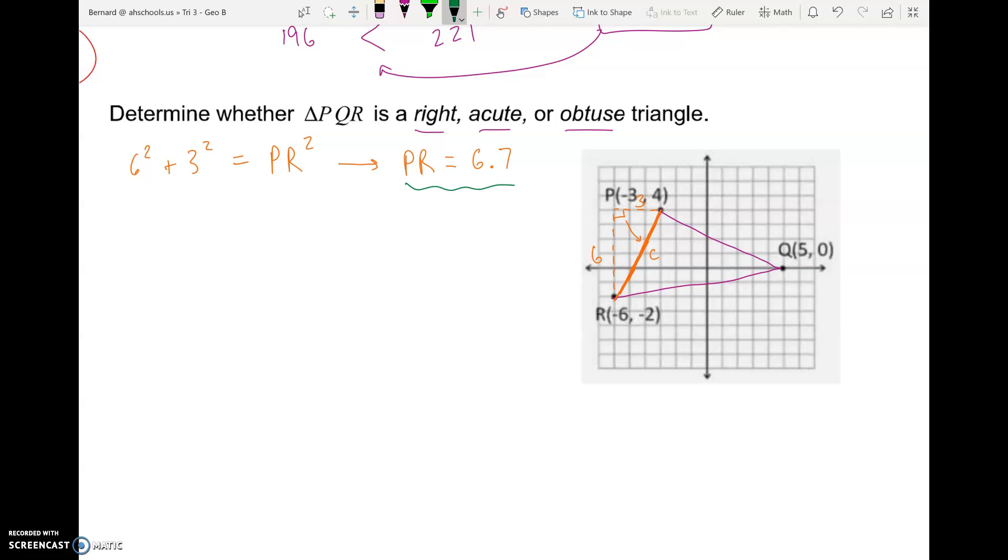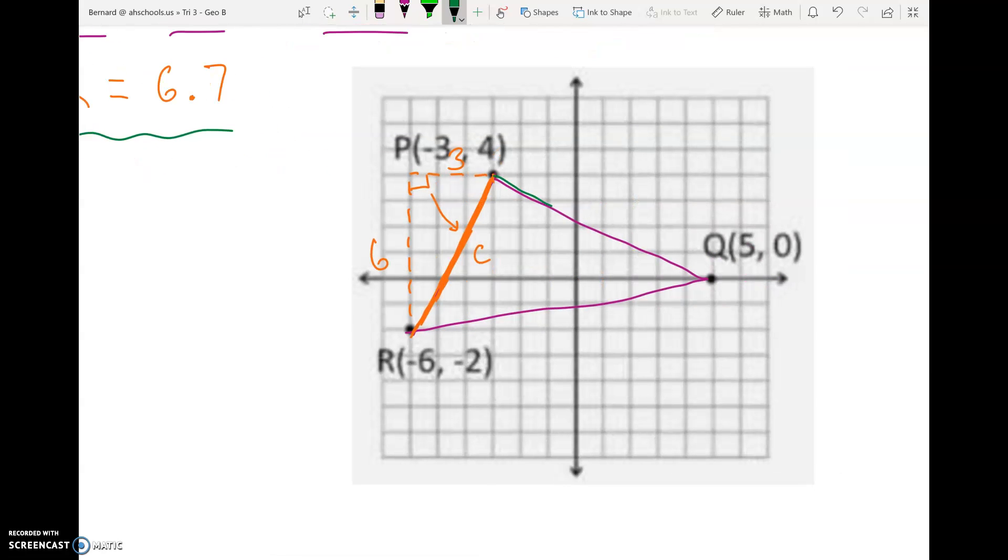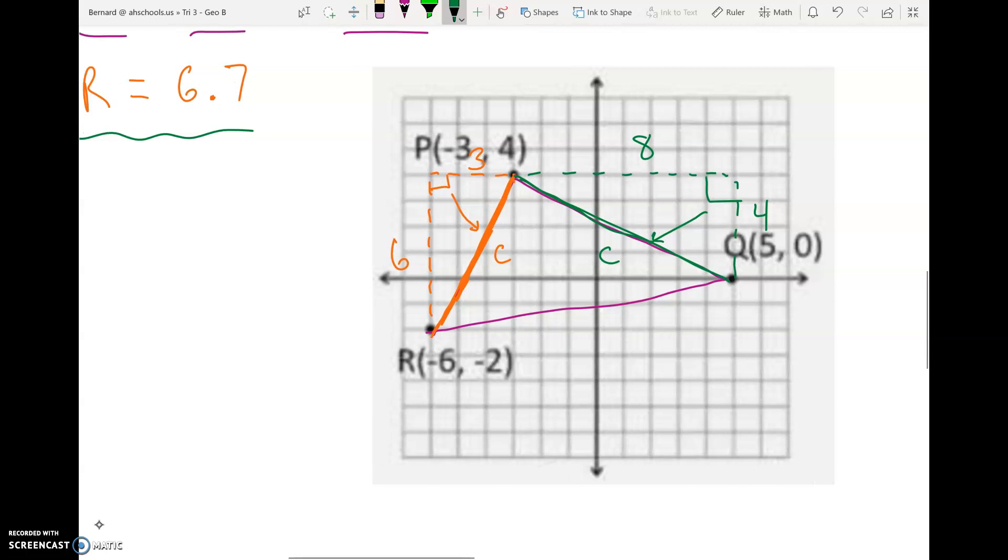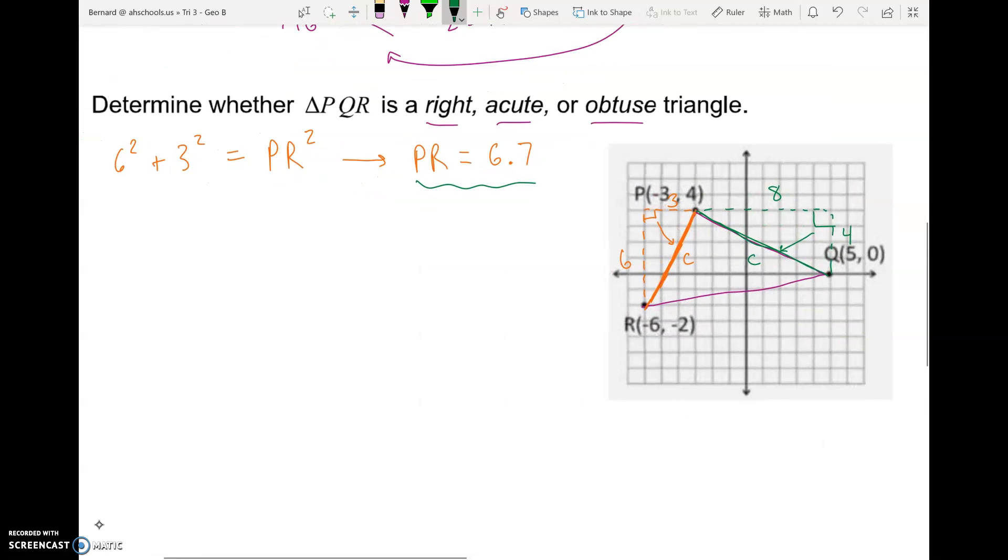But now we have to find side PQ and side RQ. So let's do PQ next. PQ is the side connecting P to Q. So let's make a dash triangle on that side. And the top of PQ looks like it's eight units long. The right side is four units down. Our C is going to be across from where our 90 degree angle is. So side PQ is what we're going to get if we do eight squared plus four squared. And that'll equal PQ squared. Same deal as before. I'm just going to go straight to what PQ is. We're squaring eight, we're squaring four, we're adding them together, and we're square rooting them. And so that's going to tell us that PQ is 8.9.